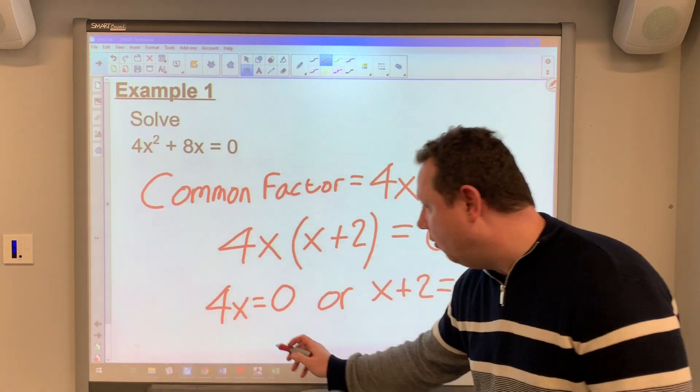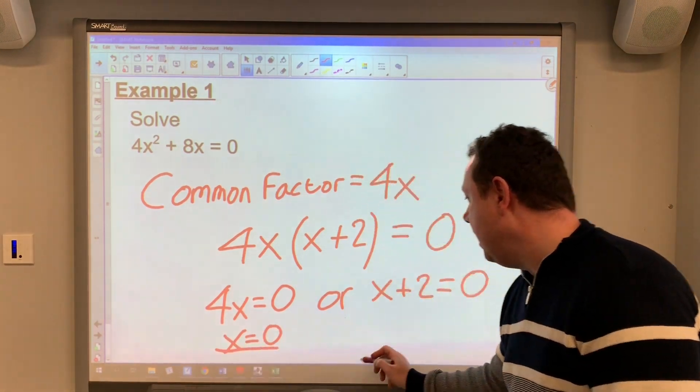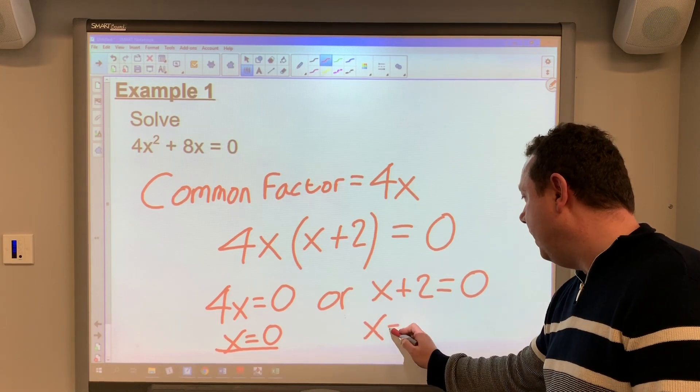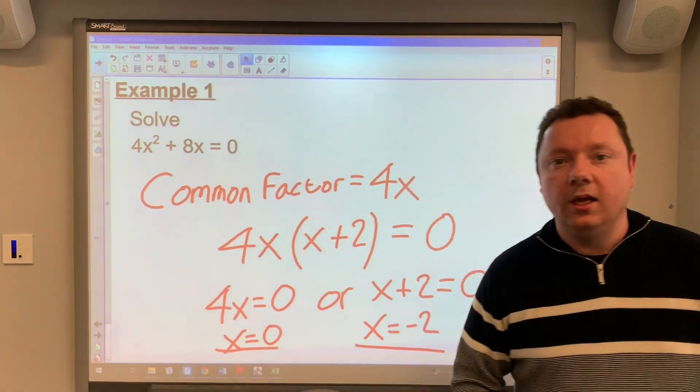So I can immediately write down 4x = 0 or x + 2 = 0. Basic equations to solve. The first one, x = 0. Nice and simple. And the second one, x = -2. And that's it. I've solved the equation.